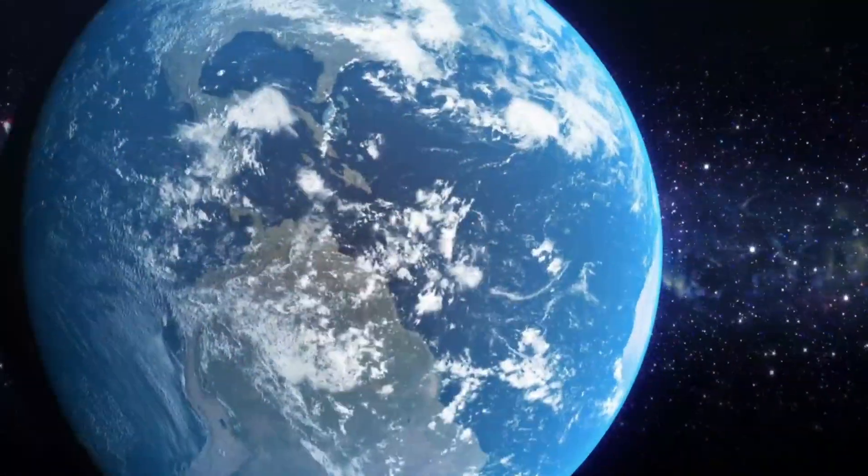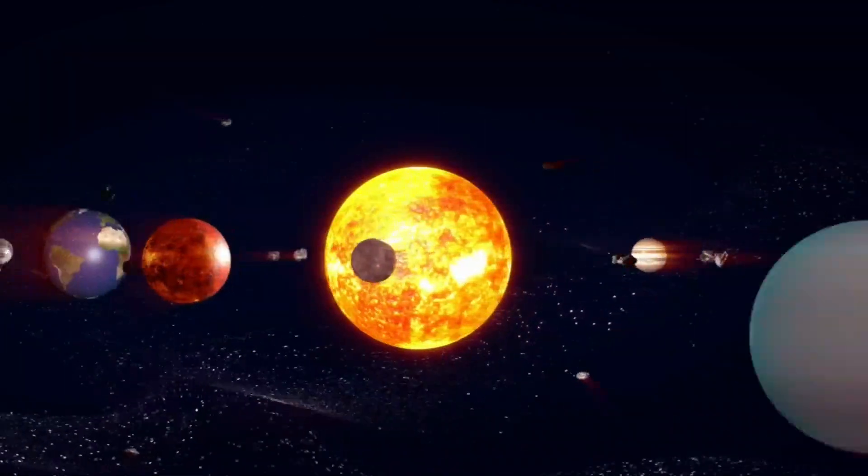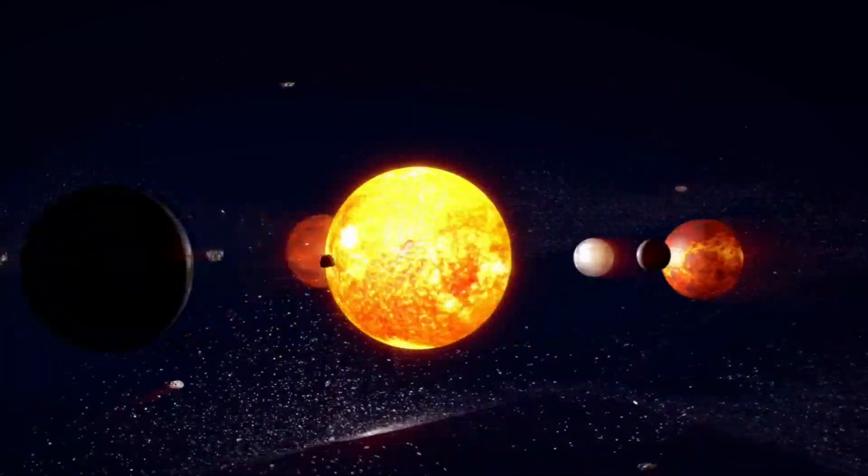As the planets shift in the sky, the night sky would be a spectacular sight. Depending on the arrangement, there would be periods of continuous daylight and continuous night, much like polar regions experience today.